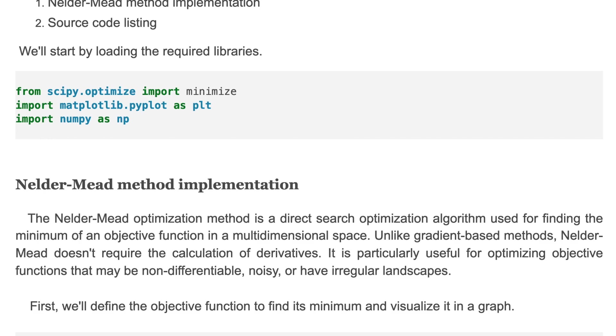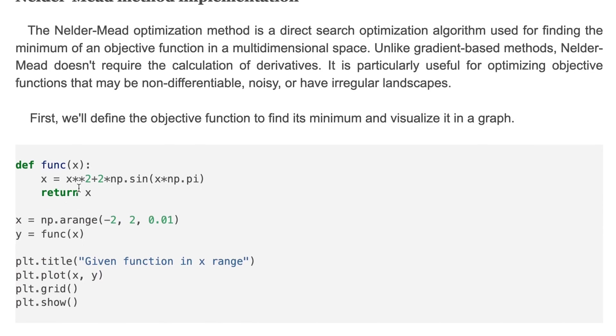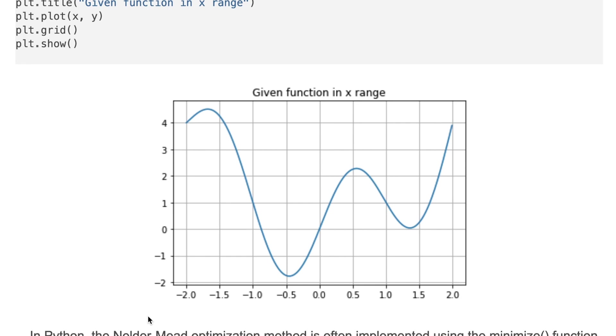First we'll define the objective function to find its minimum and visualize it in a graph. This is the objective function and we can visualize it in a plot. The plot shows the shape of the objective function.